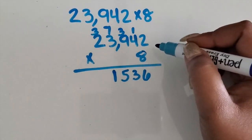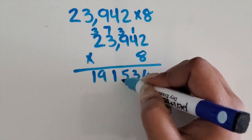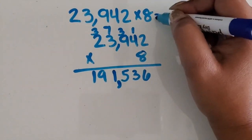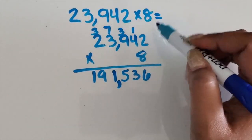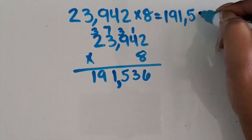8 times 2 is 16 plus 3 is 19. I'm going to place the comma between our thousands and hundreds place. The total product of 23,942 times 8 is 191,536.